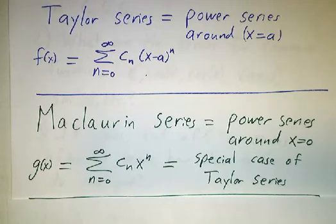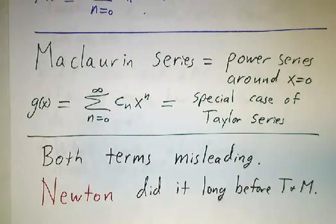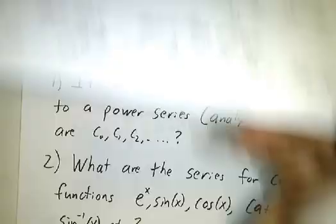Actually, both names are misnomers. Newton did both things long before Taylor or Maclaurin, but this just goes to show a general principle in mathematics. If somebody's name is attached to something, the odds are somebody else did it first.